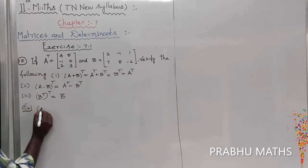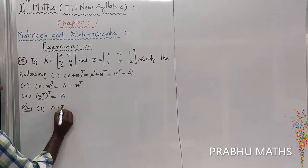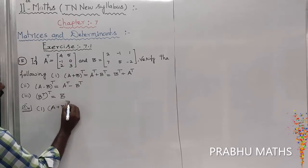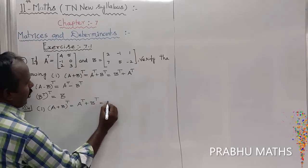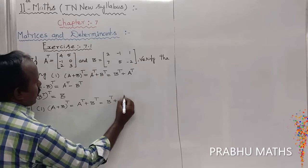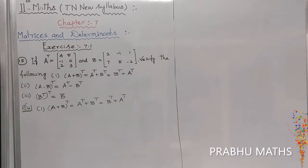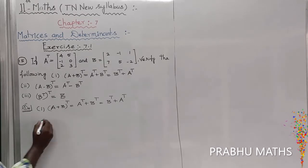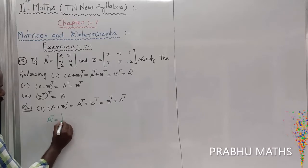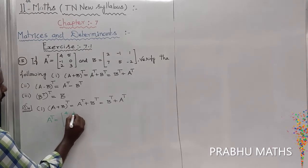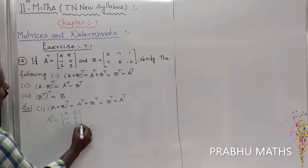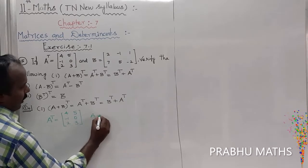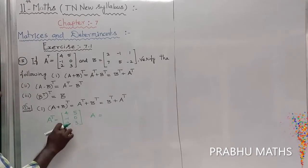The first subdivision is A plus B, so A plus B the whole transpose is equal to A transpose plus B transpose, that is equal to B transpose plus A transpose. That is the given condition. The given value of A transpose is equal to 4 5, minus 1 0, 2 3. Next, to find the value of A, the row is interchanging to column and column is interchanging to row.